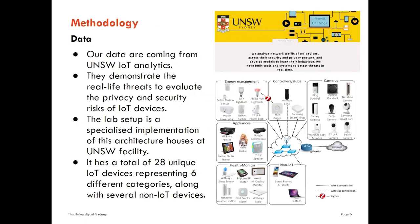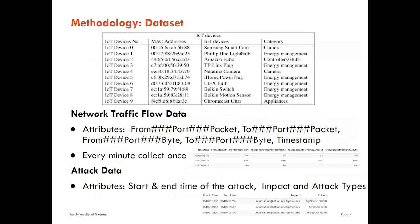Our data comes from the University of New South Wales IoT and N-BaIoT datasets. They demonstrate real-life threats to evaluate the privacy and security risks of IoT devices. The lab setup is a specialized implementation of a smart home architecture at the University of New South Wales facility. It has a total of 28 unique IoT devices representing six different categories, along with several non-IoT devices. As we can see in the table, there are 10 IoT devices that contain both benign and attack traffic datasets.